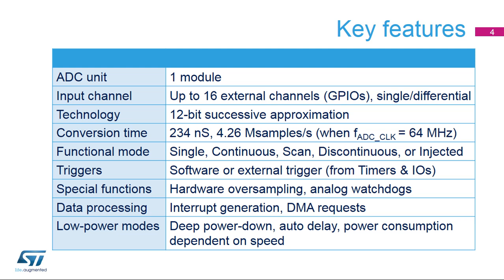There are several functional modes, which will be explained later. There are also several different triggering methods. In order to offload the CPU, the ADC has three analog watchdogs for monitoring thresholds. The ADC also offers oversampling to extend the number of bits presented in the final conversion value.